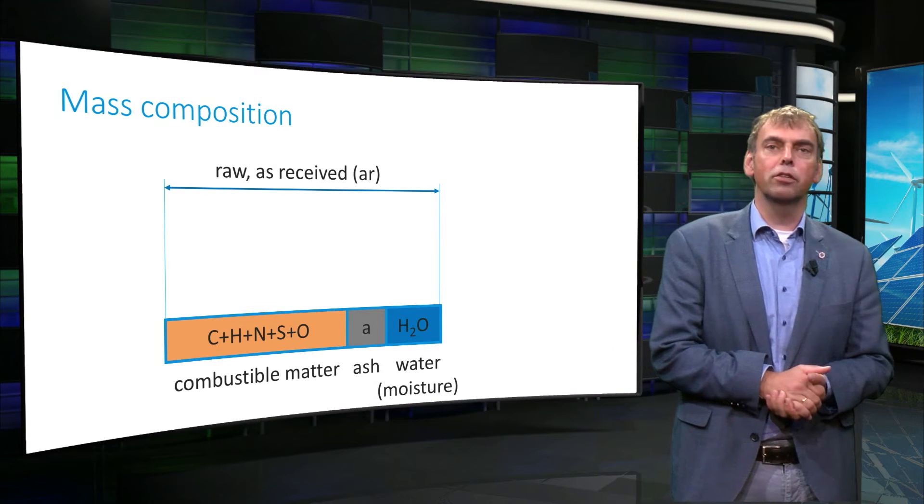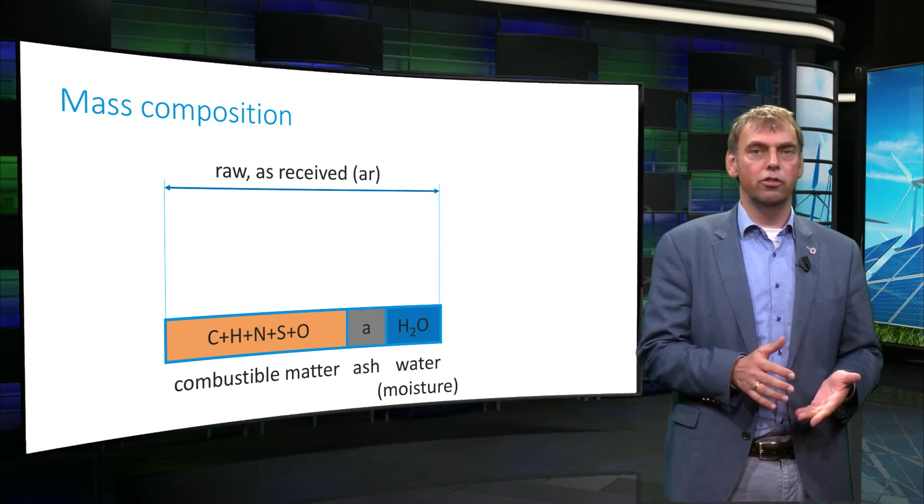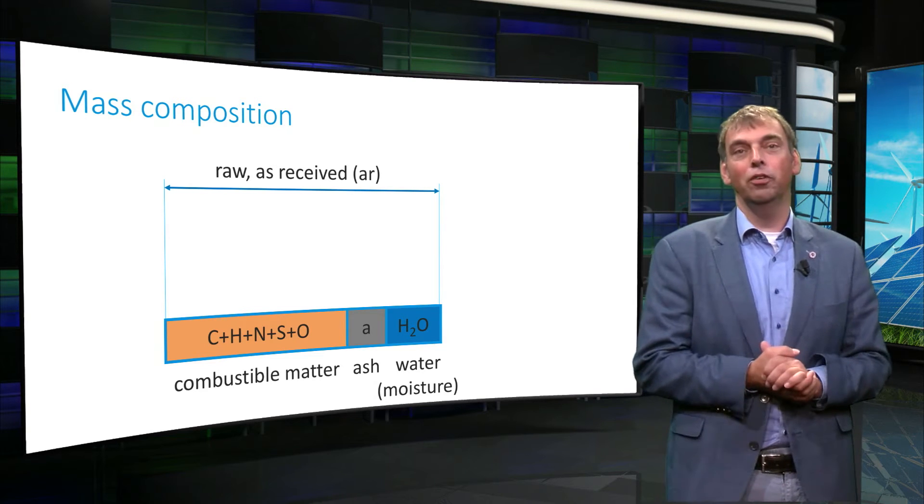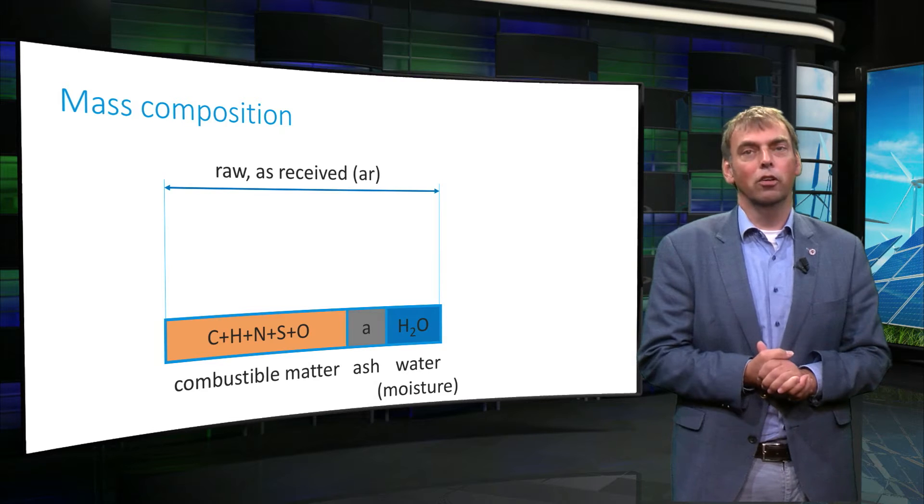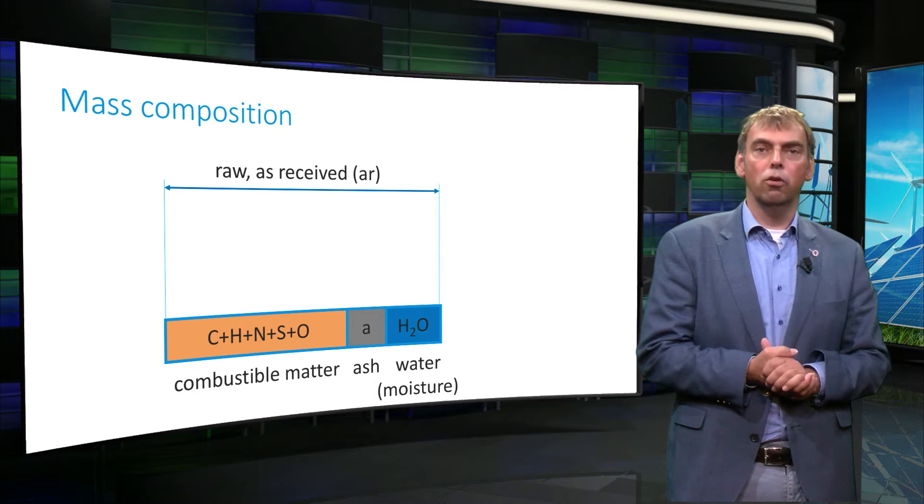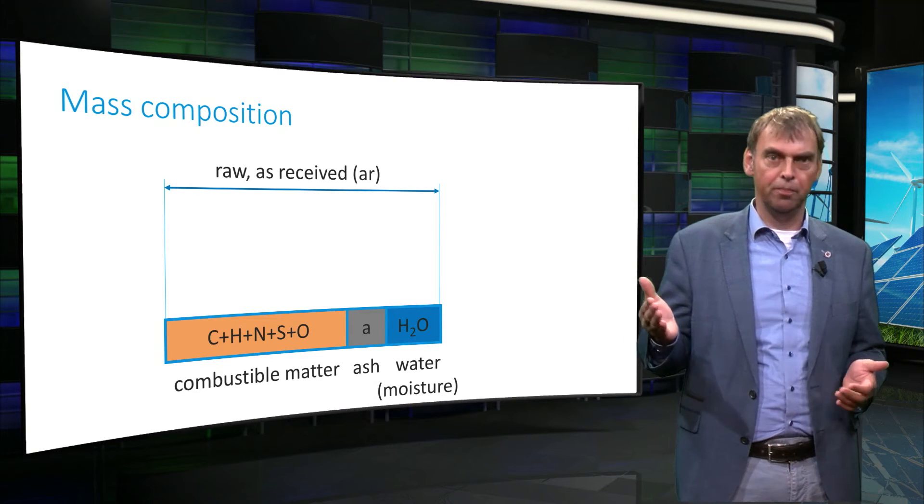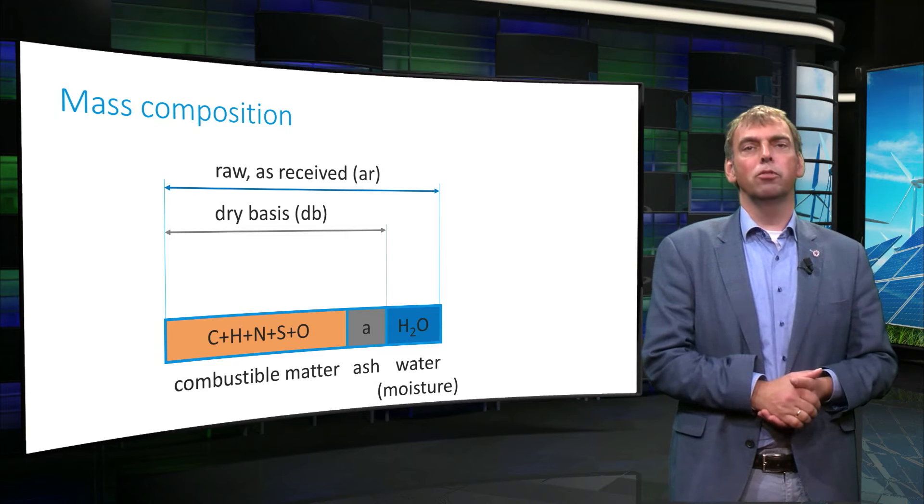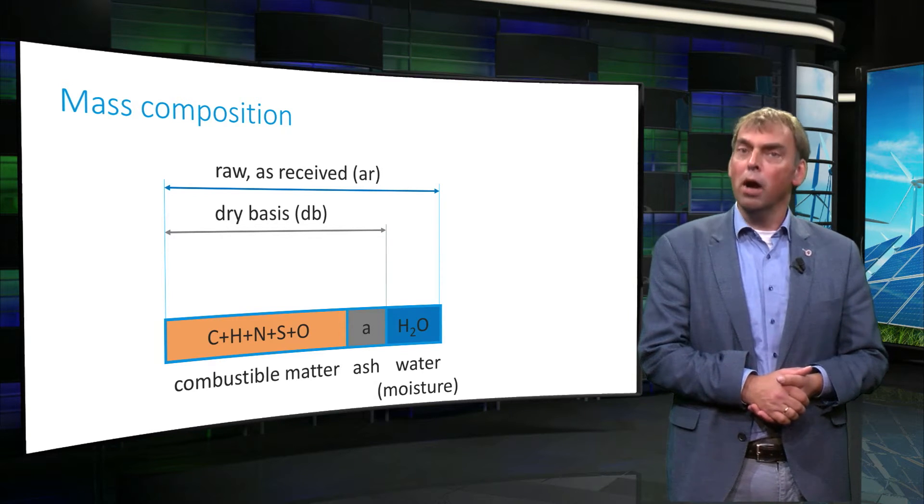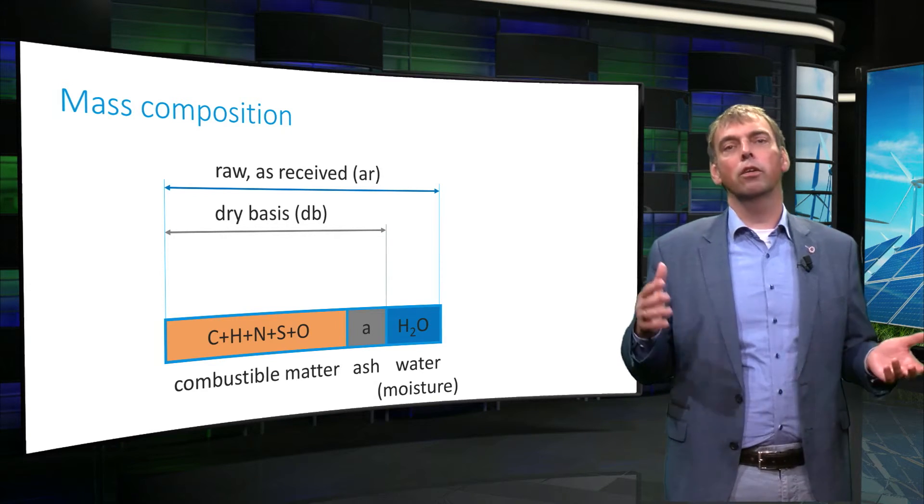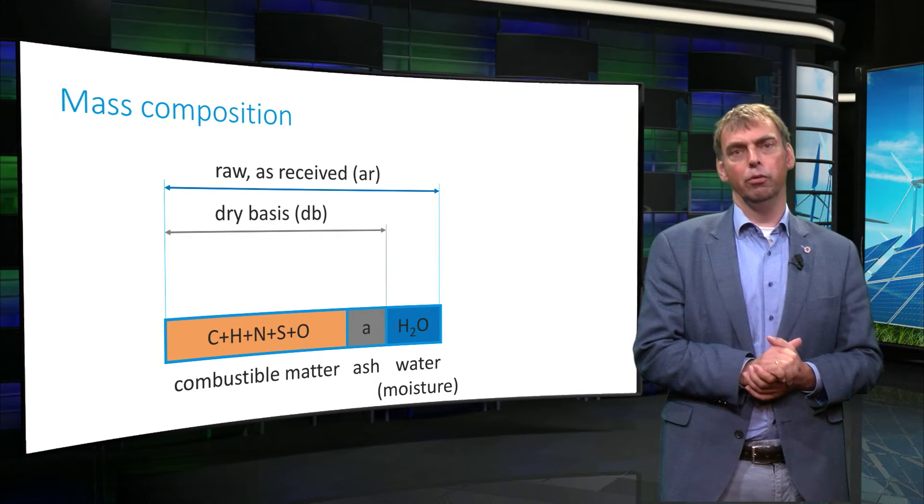The combustible matter composed of carbon, hydrogen, nitrogen, sulfur, and oxygen. The non-combustible matter, also called ash and moisture. A fuel composition description on dry basis considers that all moisture has been evaporated from the fuel.